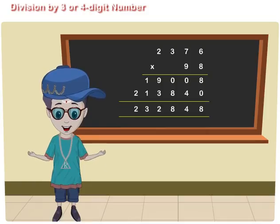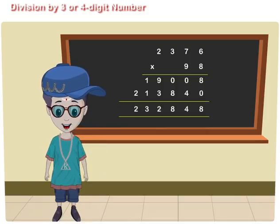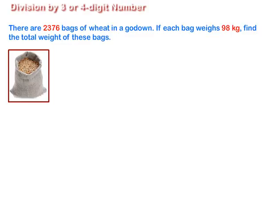Let us solve a word problem on multiplication. There are 2376 bags of wheat in a go-down. If each bag weighs 98 kg, find the total weight of these bags.